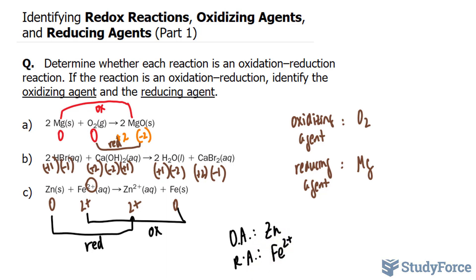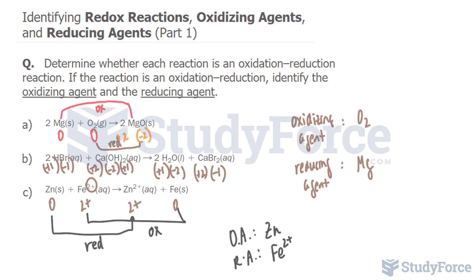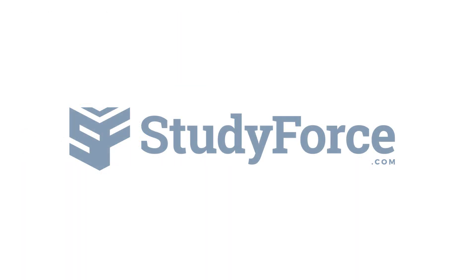And there you have it. Three examples on how to identify redox reactions, their oxidizing agents, and reducing agents. Make sure to watch part two for more examples. Thank you.